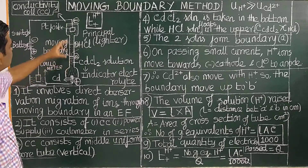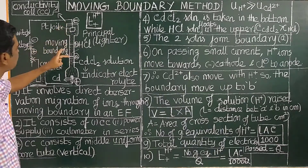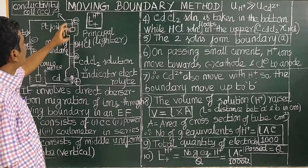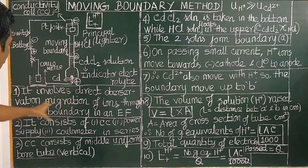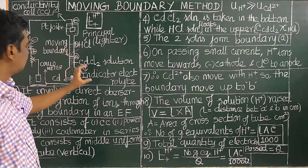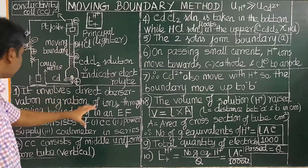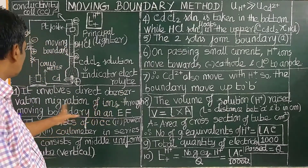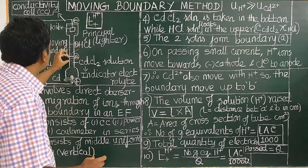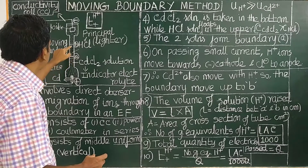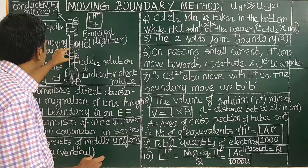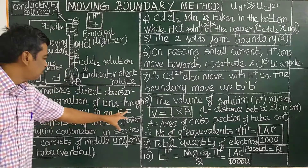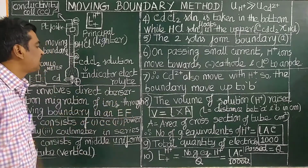When any ions — any H⁺ ions — are present, their migration is followed by direct monitoring. This involves migration of ions through a moving boundary, specifically the displacement of a sharp boundary between two liquids, which moves during the passage of electric current.